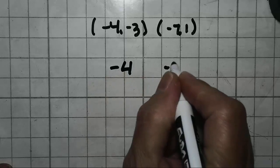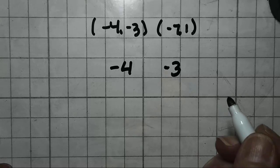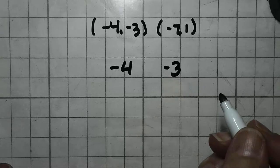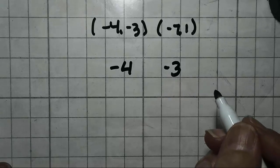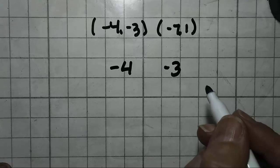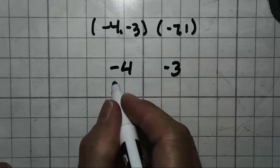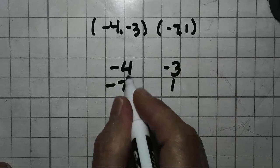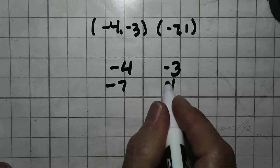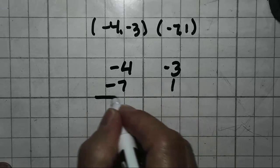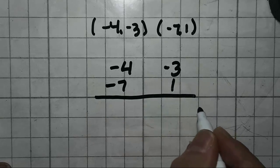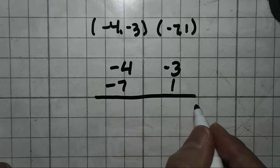So we're going to take our first point, negative 4 and negative 3, and we're just going to set them next to each other just like that. We're going to leave the parentheses off, leave the comma out. We're going to do the same thing with the second set of numbers, negative 7, 1. We're going to put the x's under the x's and the y's under the y's. And we're going to make a big line like we're going to do a big addition problem because we are going to do a big problem.